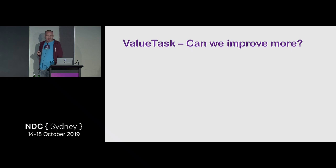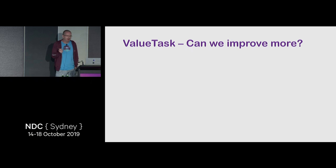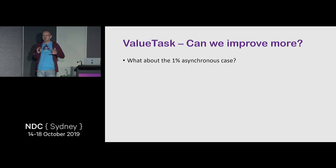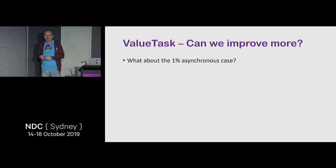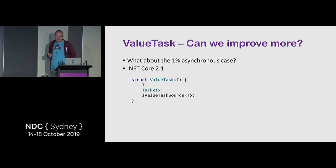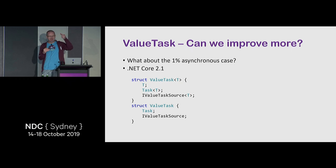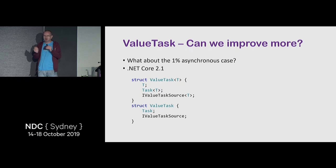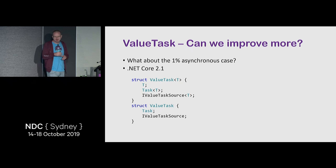Looking at ValueTask further: can we improve it even more? We discovered the one-person-asynchronous case — most of the time you complete synchronously and everything is on a struct so you don't allocate. But when you switch to the truly asynchronous case, you have to allocate. In .NET Core 2.1 we introduced another option: IValueTaskSource, which is like another option alongside T and Task<T>.